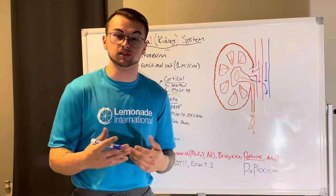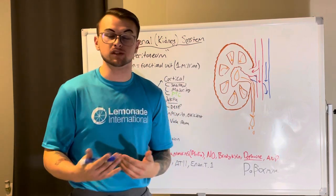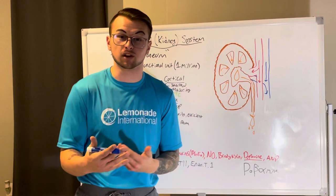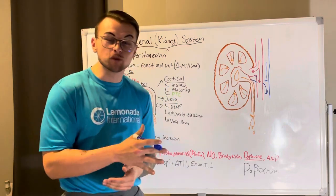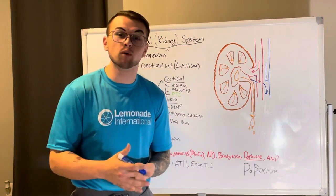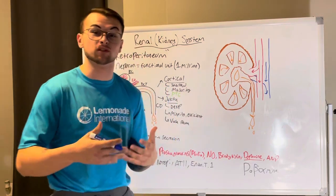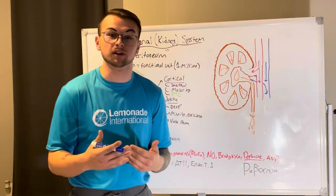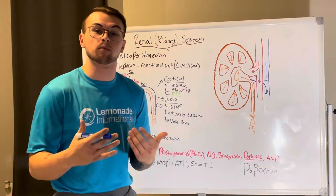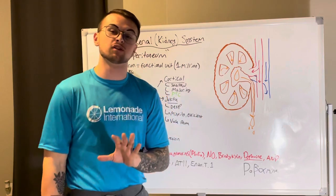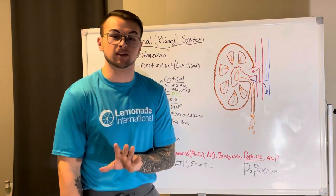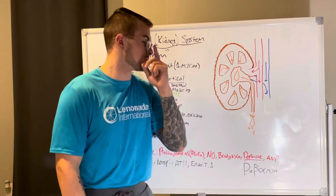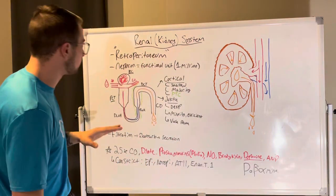We have about one million to 1.2 million nephrons in each kidney, so roughly two million to 2.4 million nephrons total. They are so important — I promise you, if you understand the nephron, you are going to understand the kidney and so many things are going to make sense to you.